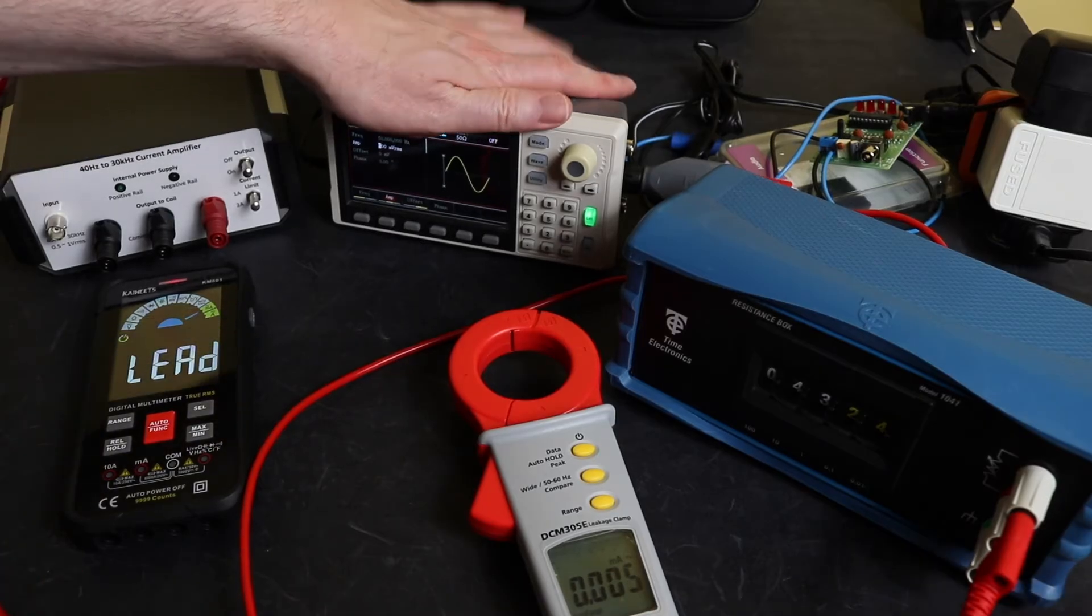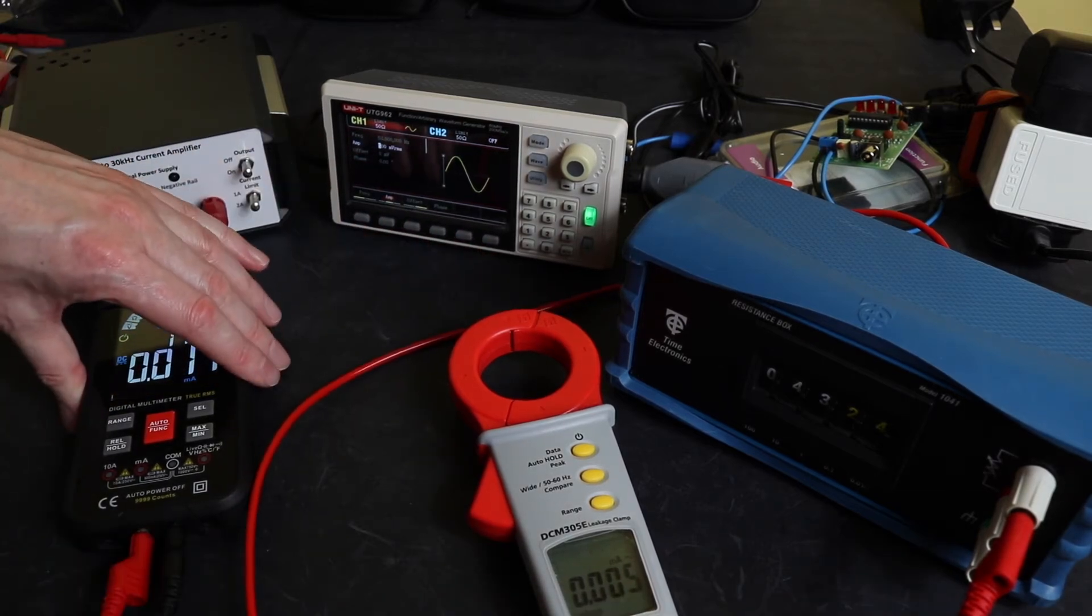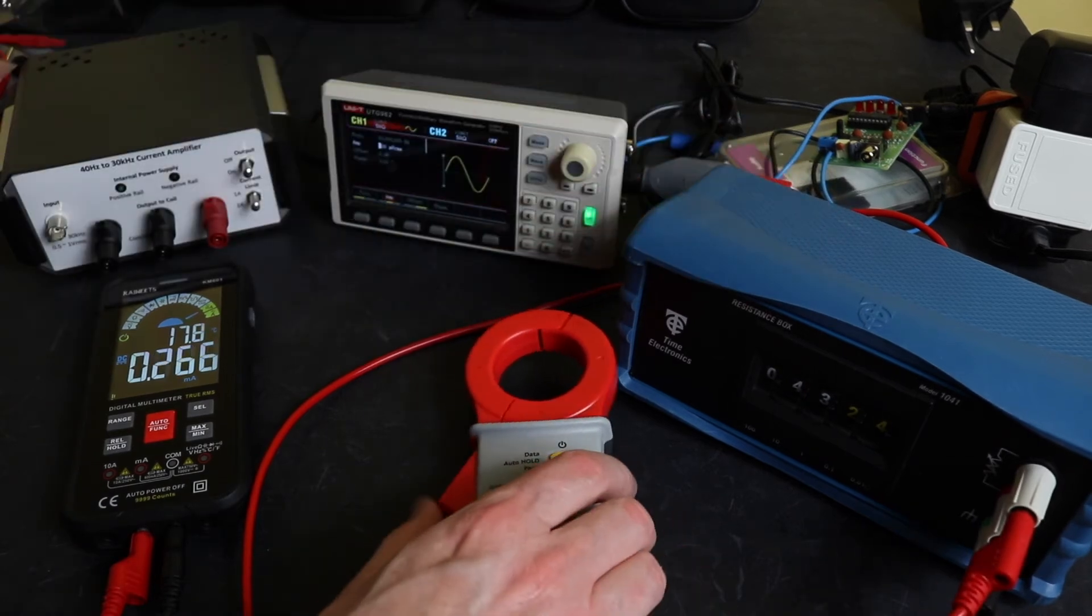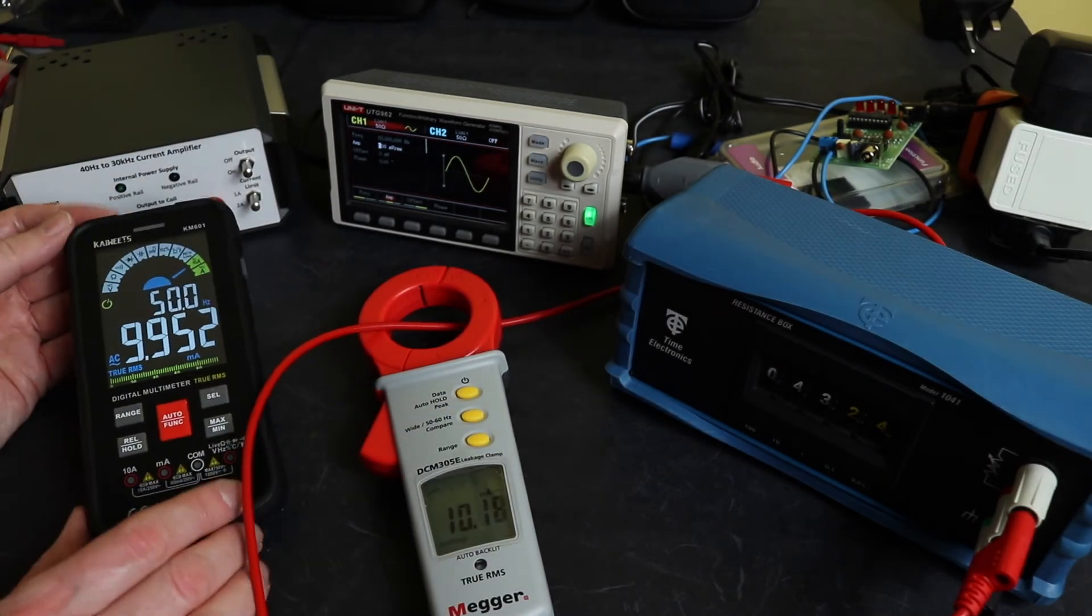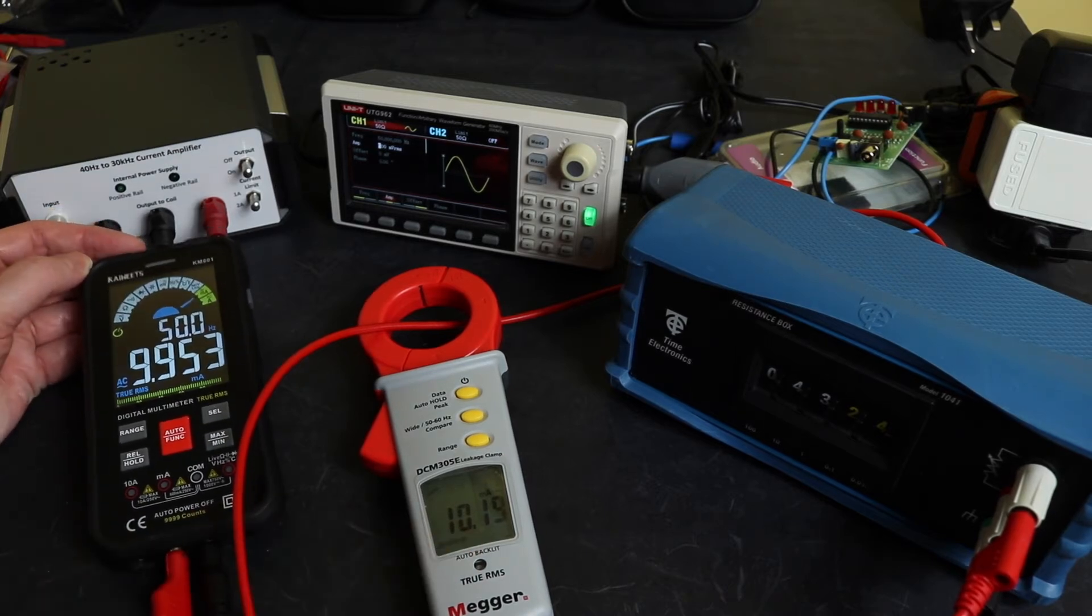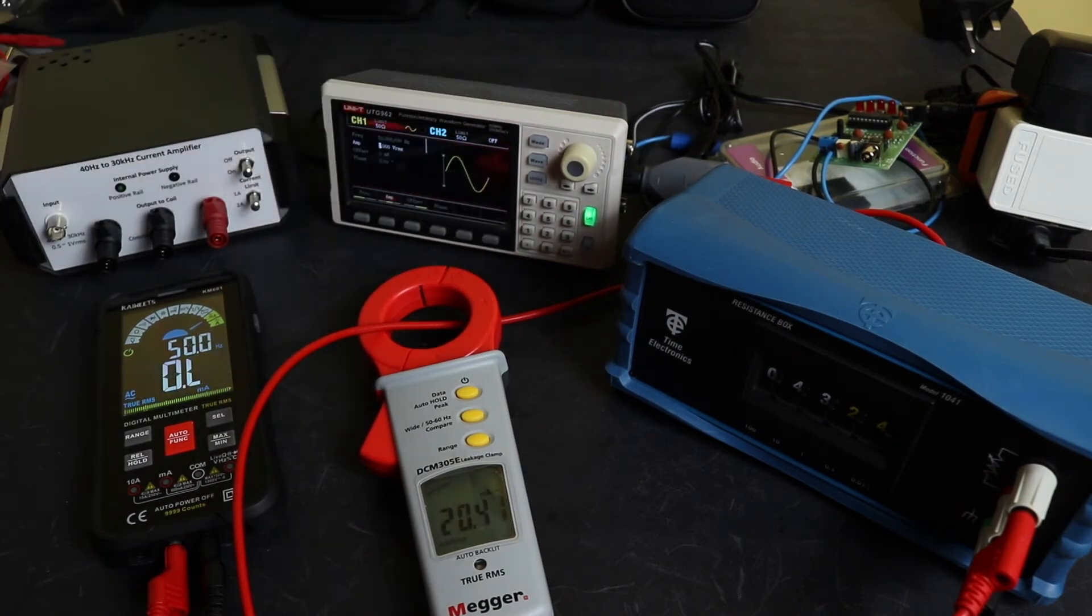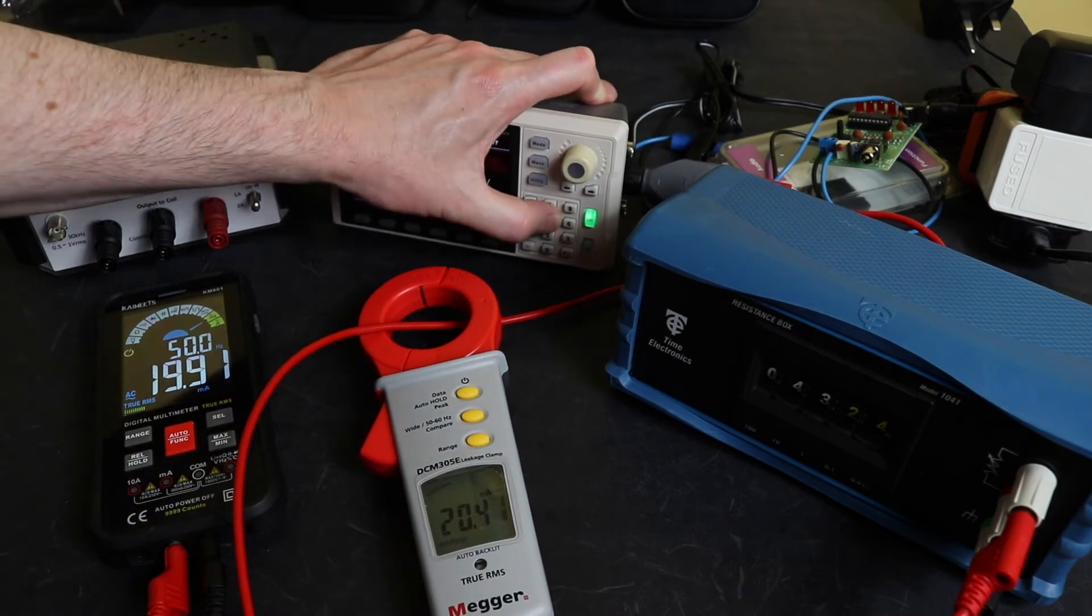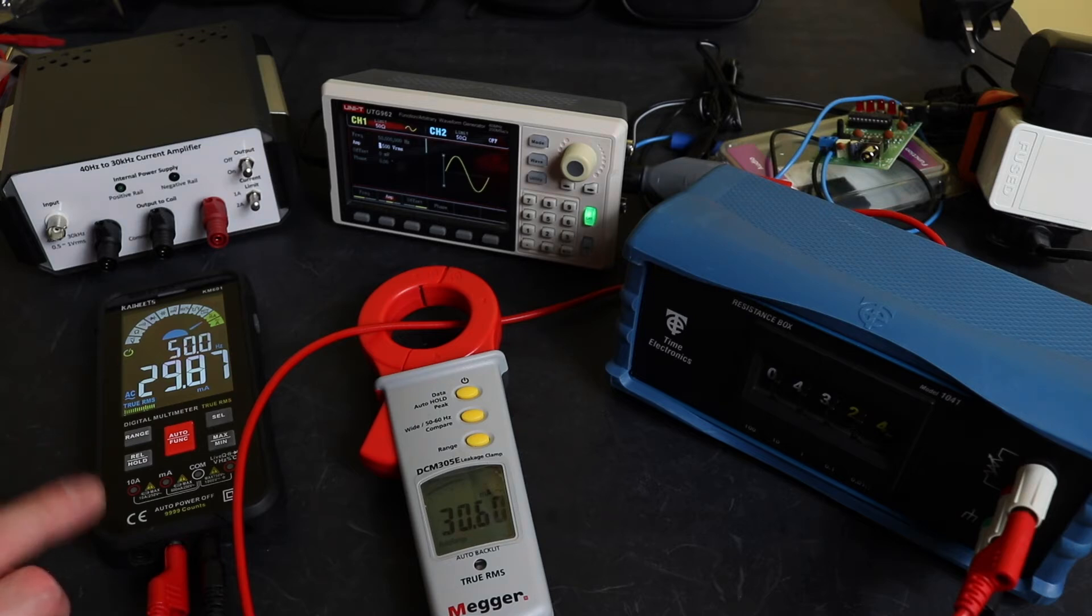Let's just connect him up in series. You can see smack on 50 Hertz, we've got 9.952 showing on the KM601 here, 10.19 there. Let's take him up to our 1 volt RMS and we go up to 20.41 and 19.91 there. Let's go to 1.5 volts and that's done my 10, 20, 30 milliamp, 30.6, 29.87 on there.